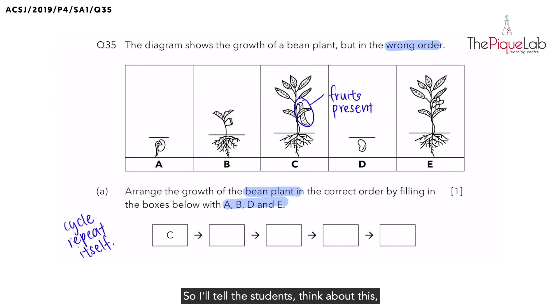So I'll tell the students, think about this. After the plant is in the adult stage, with the fruits present, what is inside the fruits? There are seeds. So what would be the next stage after the adult plant? It will be the seed stage.